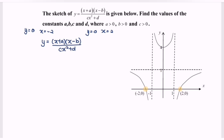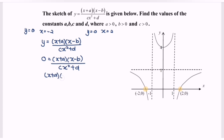So just now we mentioned this is the x-intercept, meaning that when y equals zero. So zero equals x plus a, multiplied by x minus b, over cx squared plus d. Kindly cross multiply and we will have x plus a, multiplied by x minus b, equals to zero. So x will be equals to negative a, and x will be equals to b.